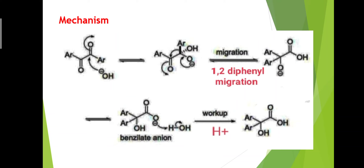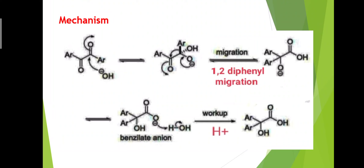Mechanism: A hydroxide ion attacks one of the two carbonyl carbons, producing a tetrahedral intermediate. This tetrahedral intermediate then undergoes a 1,2-diphenyl migration to form a non-isolable species.